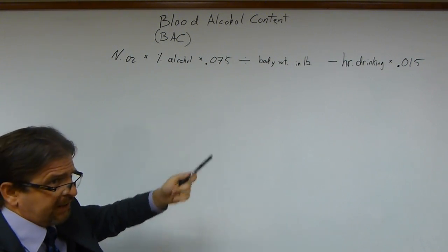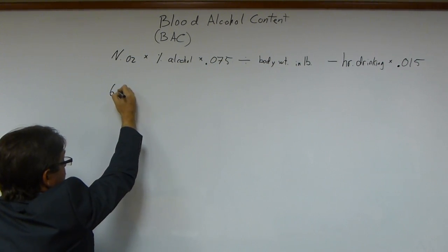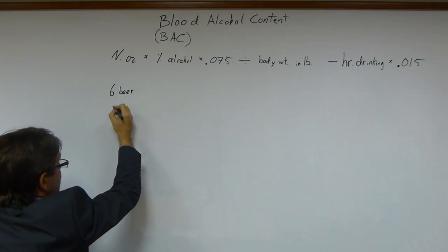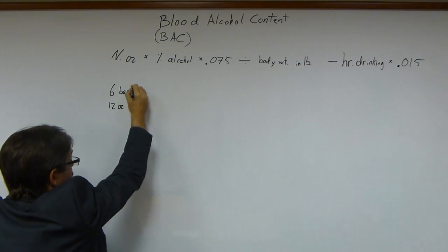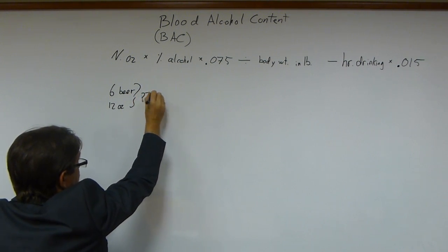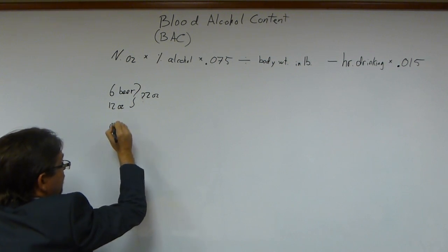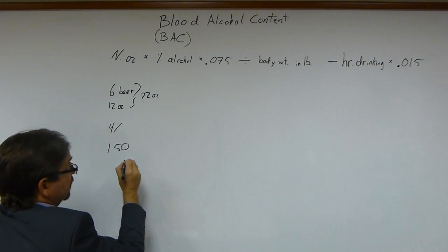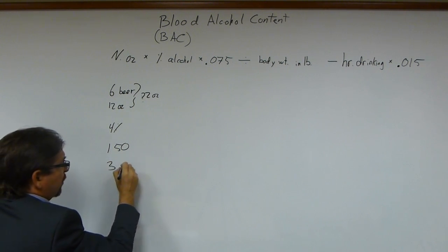Let's come up with some numbers so we can calculate this. Let's say a person has six beers that are 12 ounces each, so that would give us 72 ounces. Let's say it's four percent alcohol. Let's say a person weighs 150 pounds, and let's say they drank three hours ago.